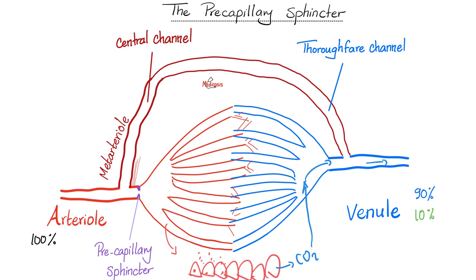The capillaries will take carbon dioxide and waste to venules, then veins, and then back to the heart. Now, what if I don't want this to happen? Because this cell exists in my fingertip and I'm running from a tiger right now.